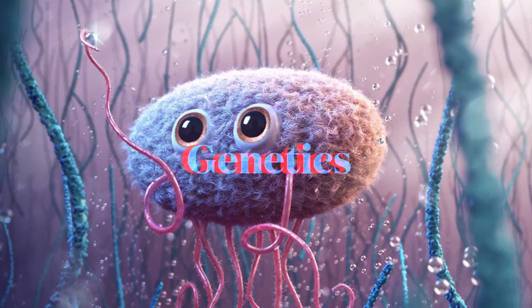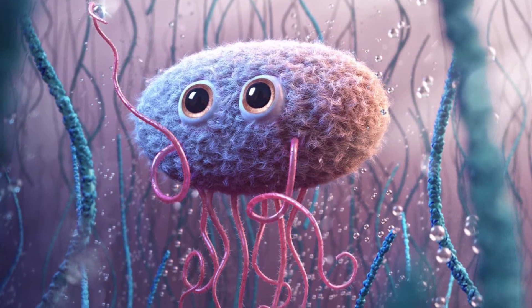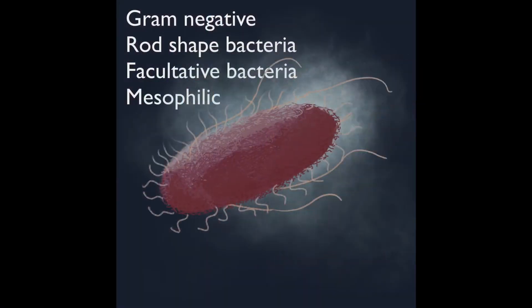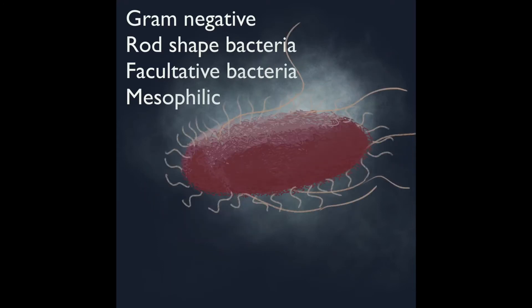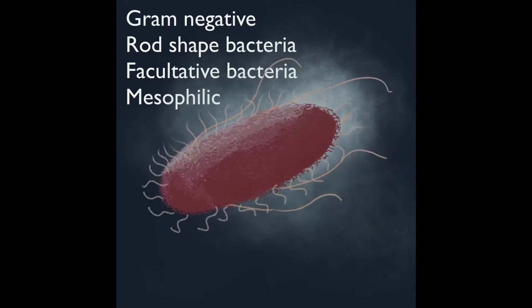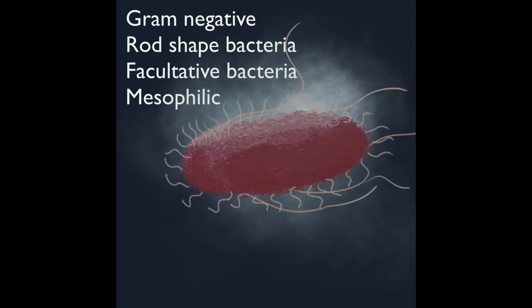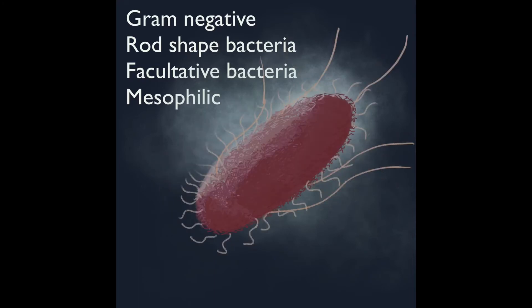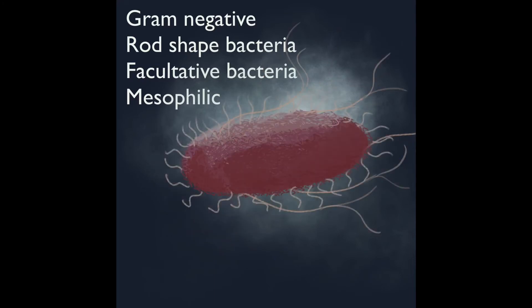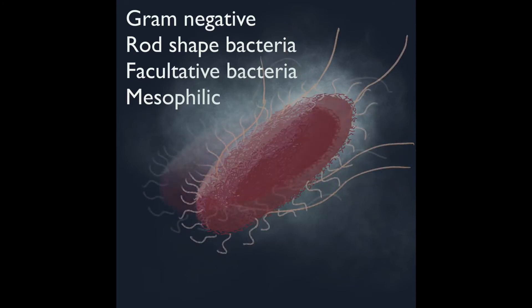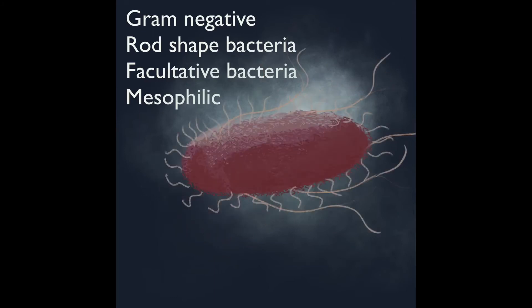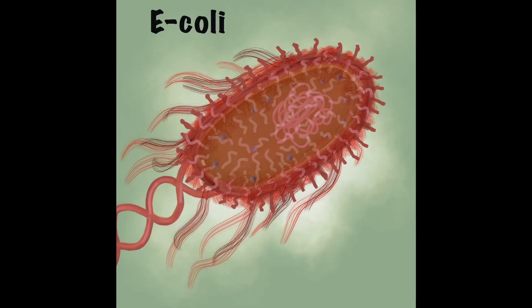The genetics of E. coli: E. coli is a gram-negative bacteria, meaning that its gram staining is going to be reddish. It has a rod shape and it is a facultative bacteria, which allows it to survive with or without oxygen. E. coli is also mesophilic, meaning that it survives best at temperatures of 37 degrees Celsius to 48.8 degrees Celsius — that is why E. coli survives at body temperature.